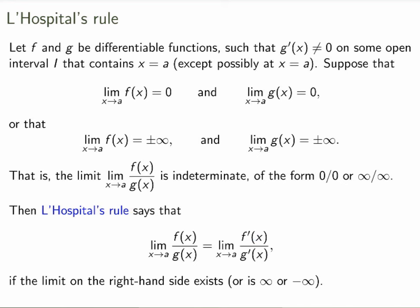So that gives a very powerful way of evaluating limits of the type 0 over 0 or infinity over infinity. Now it's important to note that in L'Hôpital's rule, on the right hand side this is not the derivative of the quotient. We're not taking the derivative of the quotient — we're taking the derivative of the numerator over the derivative of the denominator. It's very different.